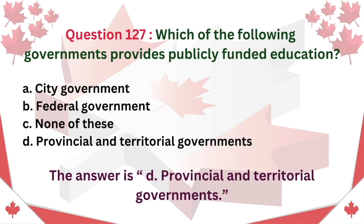Question 127: Which of the following governments provides publicly funded education? A. City Government. B. Federal Government. C. None of these. D. Provincial and Territorial Governments. The answer is D: Provincial and Territorial Governments.